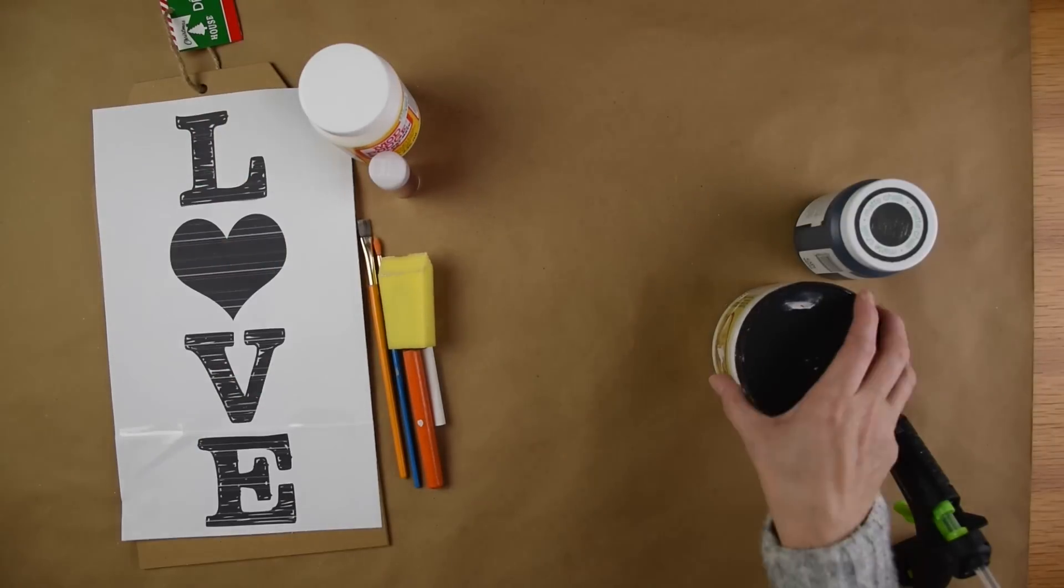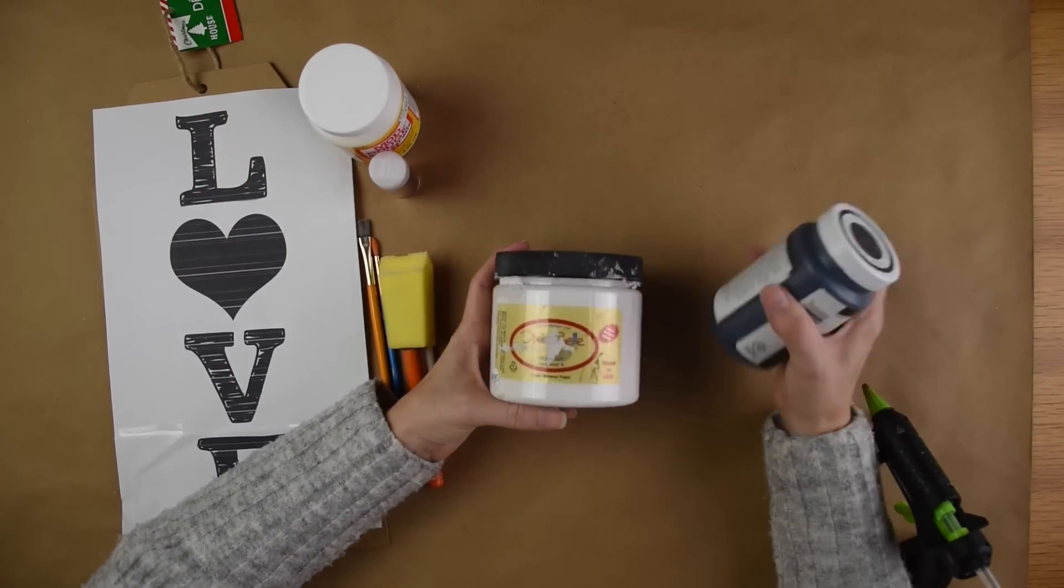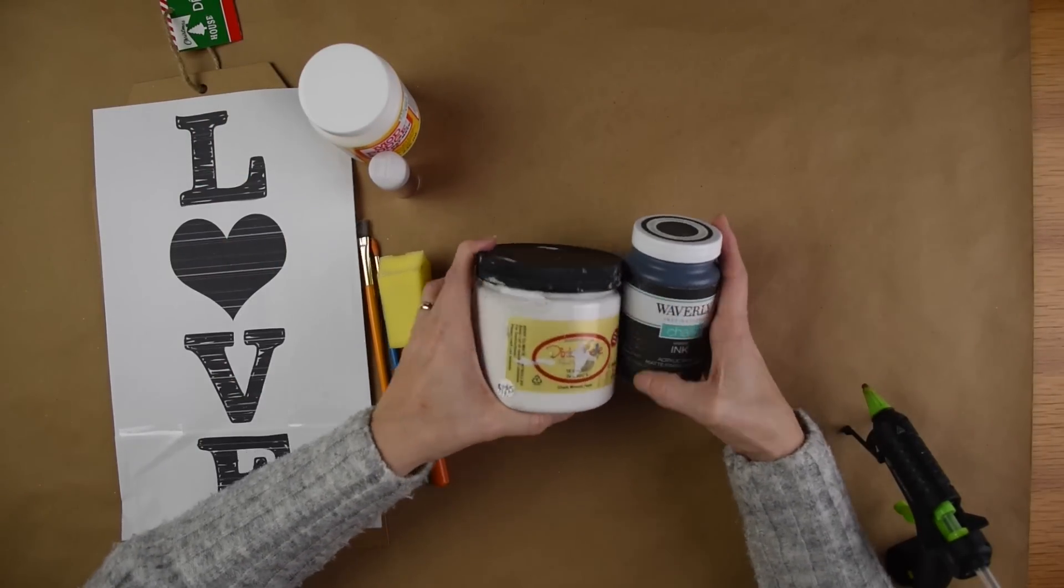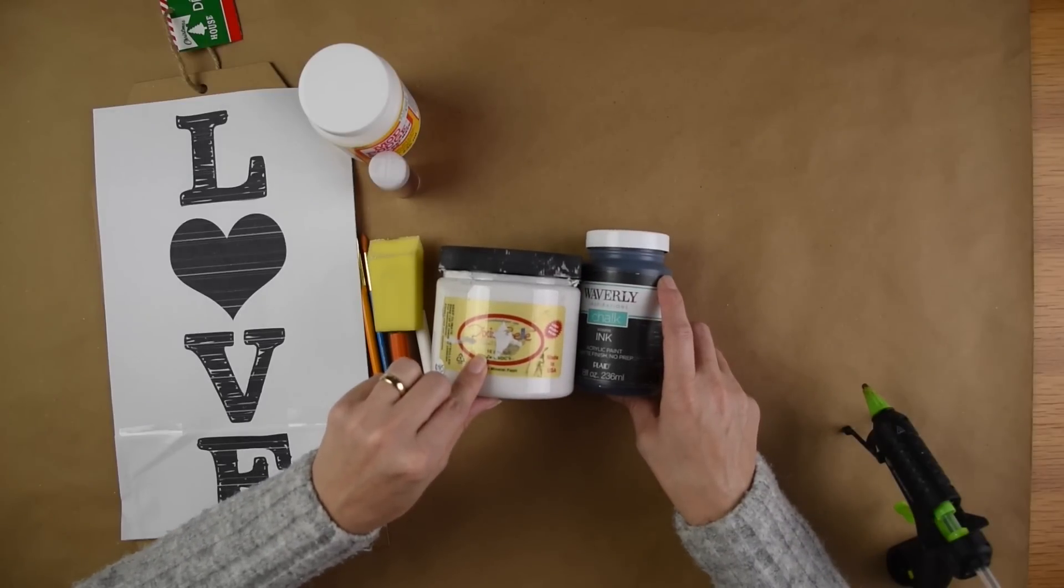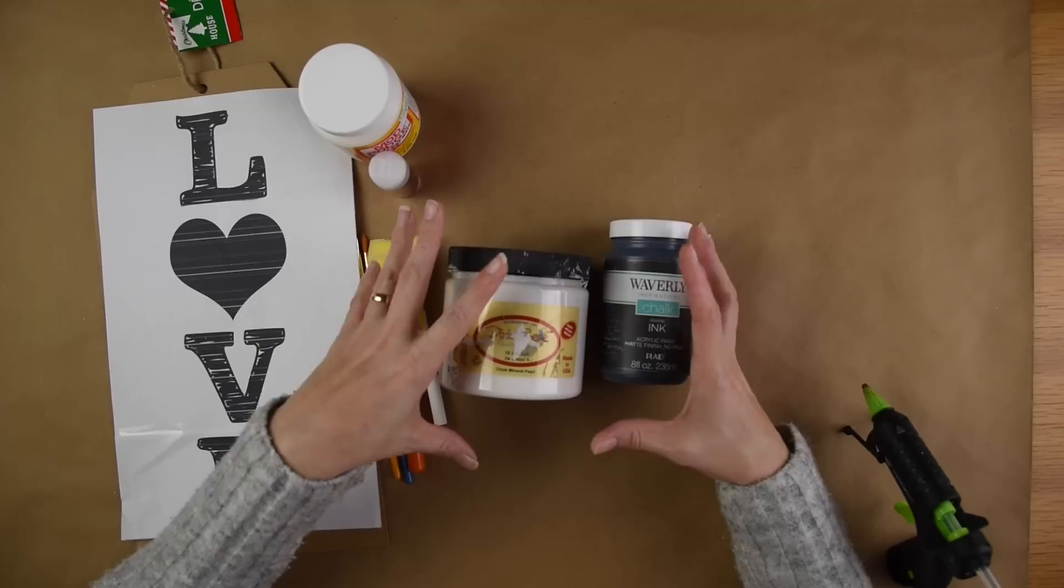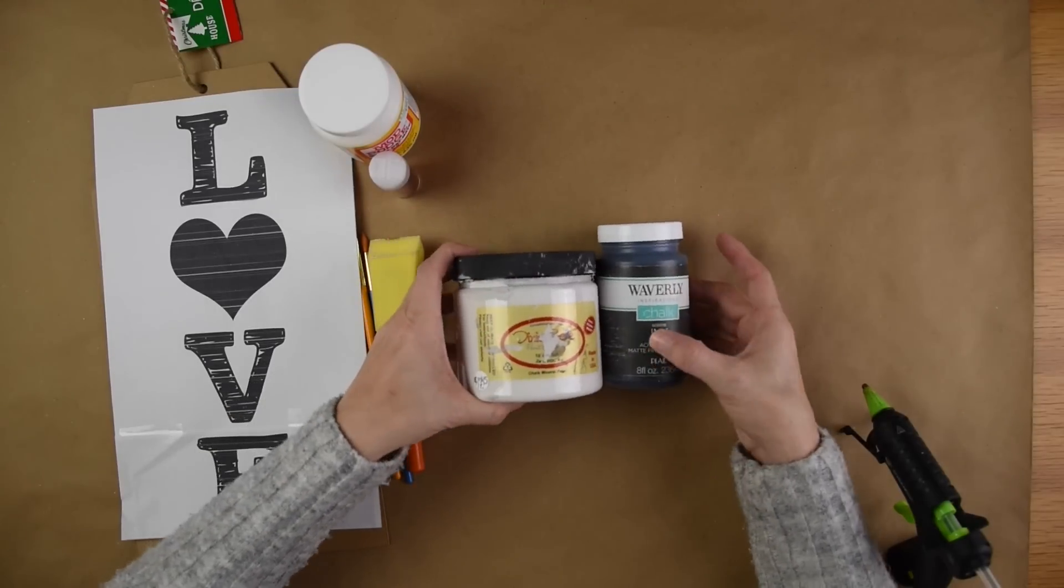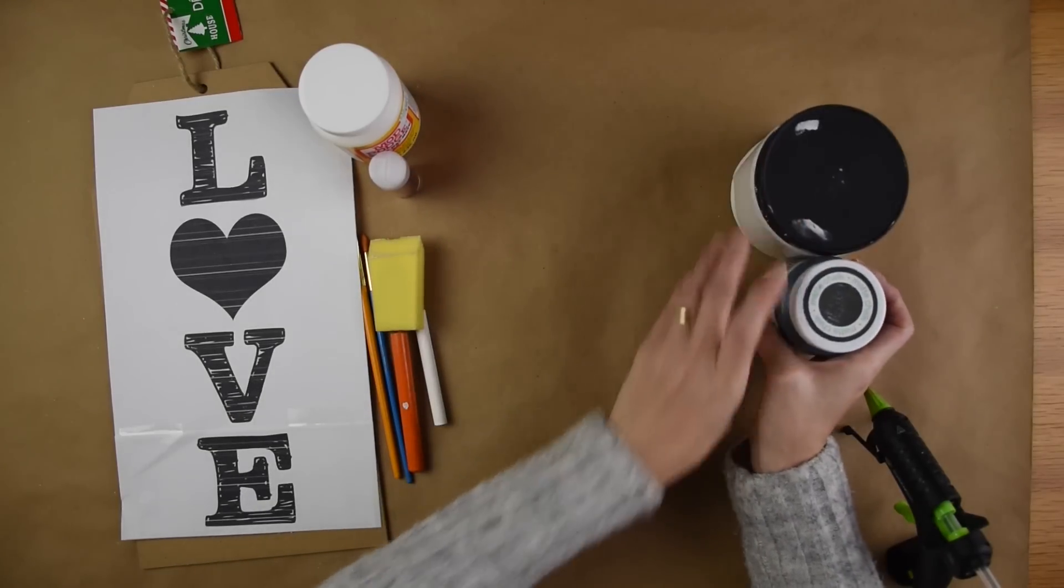I'm also going to be using some chalk paint. This is in the color fluff and I'm also going to be using the color ink in Waverly brand. I'm going to actually mix the two together to make a light gray. If you have a gray paint then go ahead and use your gray paint. Also going to be using a hot glue gun.